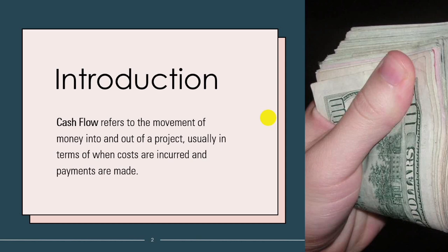Cash flow helps project managers anticipate funding requirements and manage payments to contractors and suppliers. For example, a construction project might have heavy expenses in the early stages due to equipment and material procurement, but later stages may have more labor-related costs as the project moves towards completion. By mapping out cash flow in the project schedule, you can see when costs are expected to occur, allowing the project manager to ensure there is sufficient cash to cover these expenses.